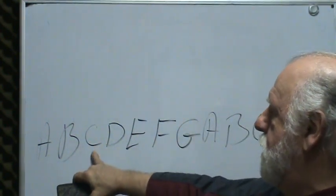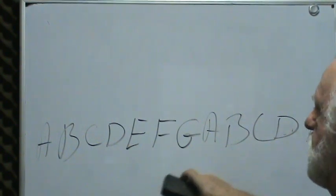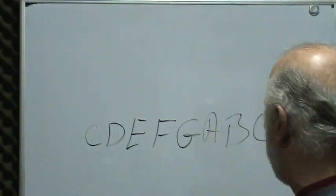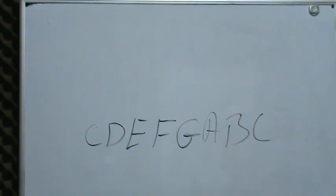We're going to start with C and go to C. So we're going to do this: C, D, E, F, G, A, B, C. That's going to be where we'll spend a lot of our time.